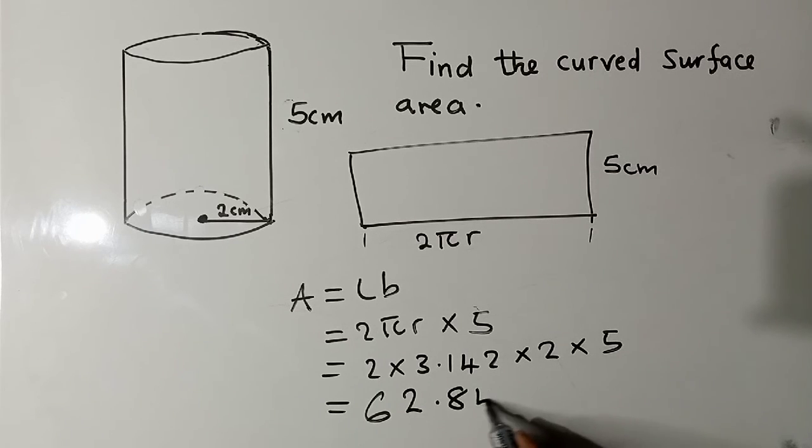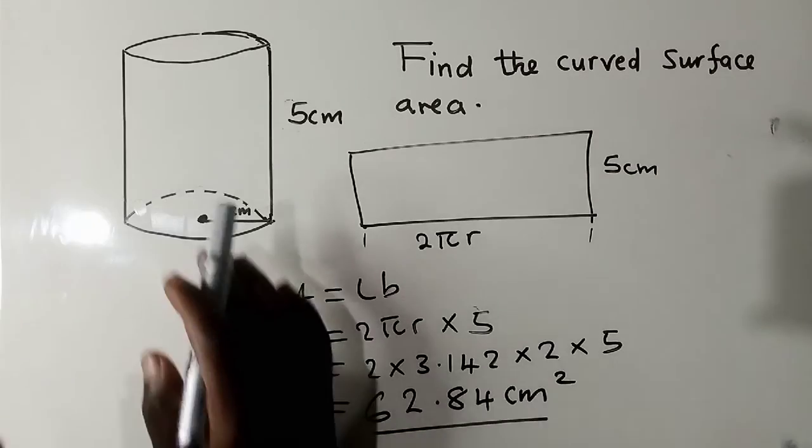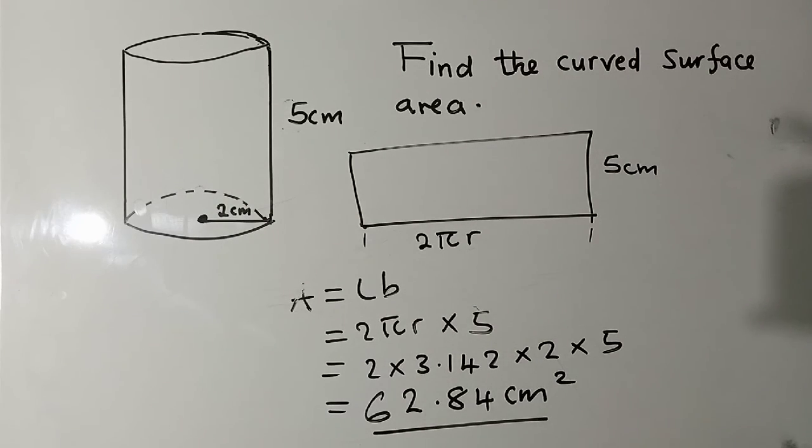62.84 centimeters squared. So this is how you find the curved surface area, the area of the curve around this cylinder.